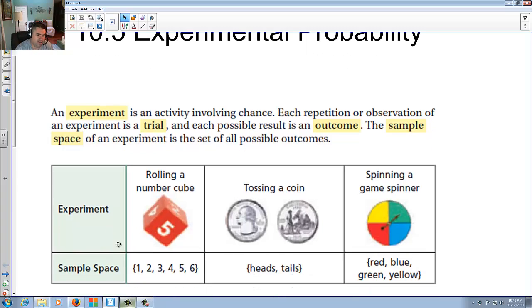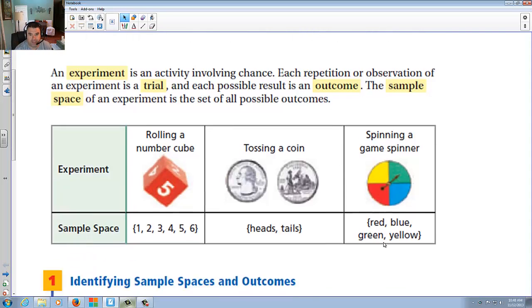Suppose I were to get, say, rolling a cube, say a six-sided cube. There's six possible outcomes, so I might have six different outcomes. Tossing a coin, you have heads or tails, so I have two possibilities. Spinning the game spinner, in this case here, looks like I have four possible things it could land on.